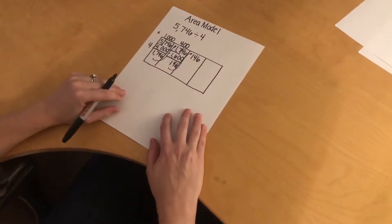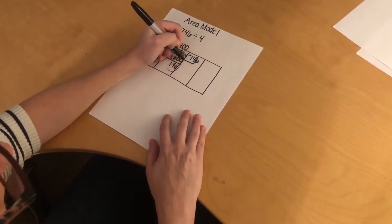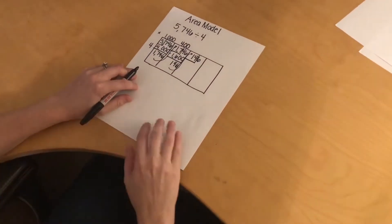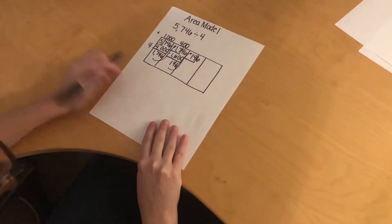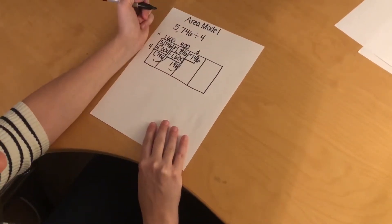And now I'm working in the tens place. I have a 4 in the tens place and everything in front of it, so I have 14 tens. How many times does 4 go into 14? It goes in 3 times. But since I'm working in the tens place, it's not just 3, it's 30.